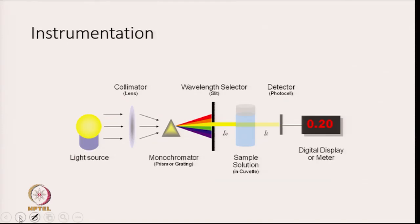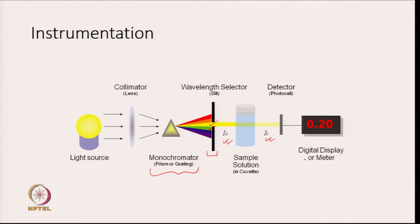The light source passes through a lens, then through a monochromator — which is either a prism or a grating — that splits light into various colors. You select one using a slit, which is a wavelength selector you can move. In this figure, yellow light has been selected, but moving the slit selects green light and so on. You pass the selected light through the sample solution and measure the intensity after absorption. Based on the incident and transmitted intensities, the digital display tells you the absorbance.